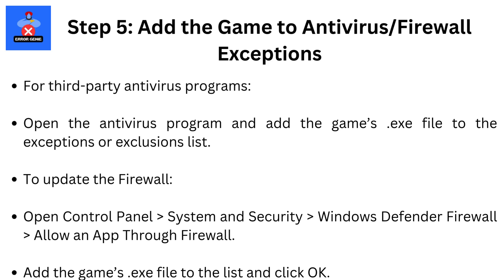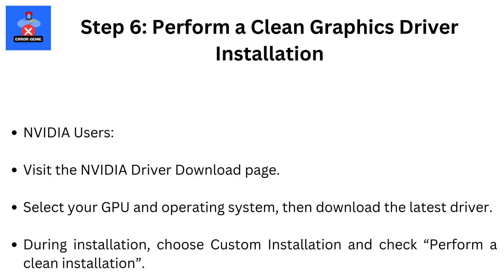To update the firewall, open Control Panel, then System and Security, then Windows Defender Firewall, then Allow an App Through Firewall. Add the game's .exe file to the list and click OK.